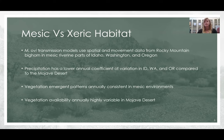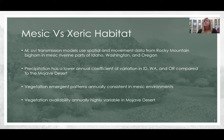These areas are characterized by a low annual coefficient of variation compared to the Mojave Desert, and as a result they have very consistent year-to-year vegetation emergent patterns. As opposed to the Mojave Desert, there is a really high coefficient of variation for vegetation emergent from year to year.